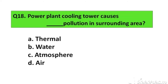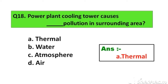Question number 18. Power plant cooling towers cause which type of pollution in the surrounding area? Option A. Thermal, B. Water, C. Atmosphere, D. Air. The right answer is Option A. Thermal.